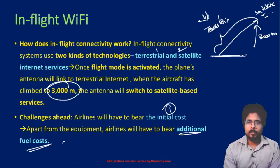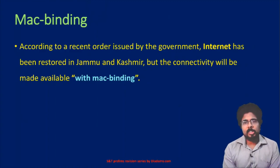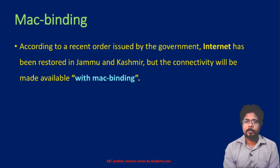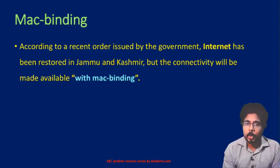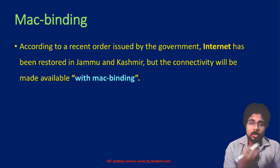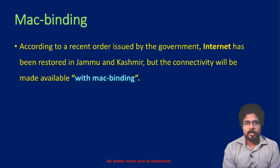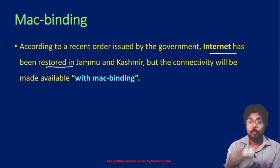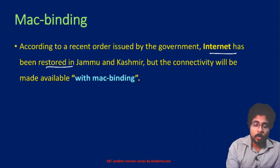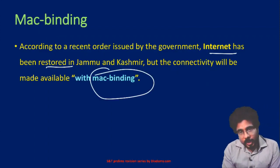That is about in-flight Wi-Fi — permission was given by the Government of India and the Telecom Authority. Next, MAC binding. As you know, August 5th, 2019 is the day when the Union Government abrogated Article 35A and Article 370, removing the special status for Jammu and Kashmir. After that, the Union Government suspended the internet in Jammu and Kashmir to stop illegal activities, spread of fake news, and to provide security.